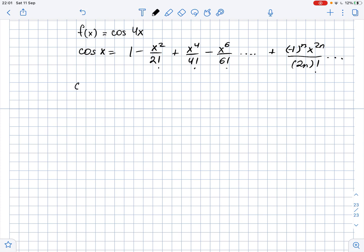Then we need to replace x with 4x. So, we get that cosine of 4x equals 1 minus 4x squared over 2 factorial plus 4x to the fourth power